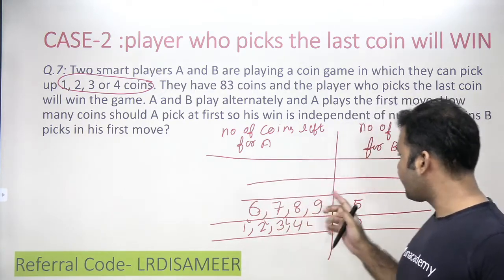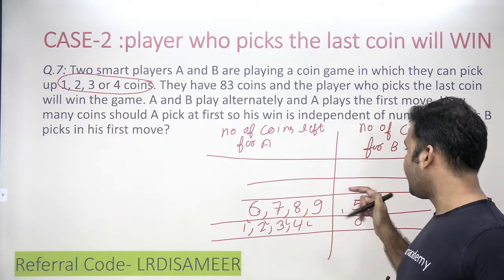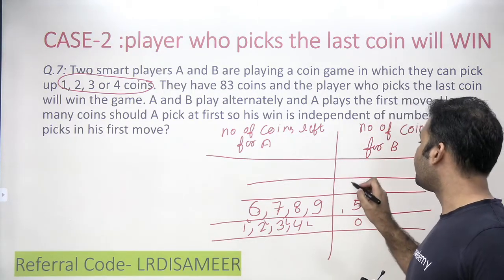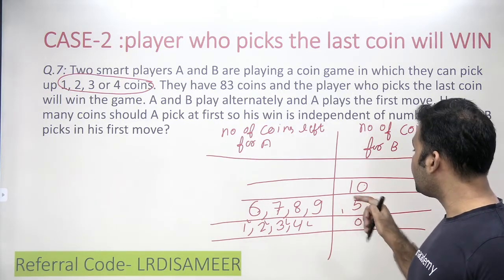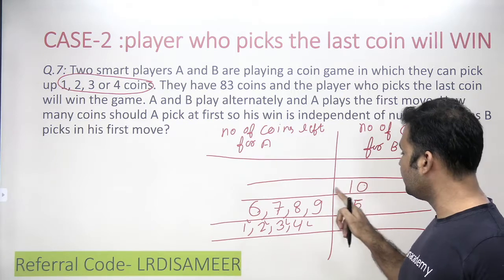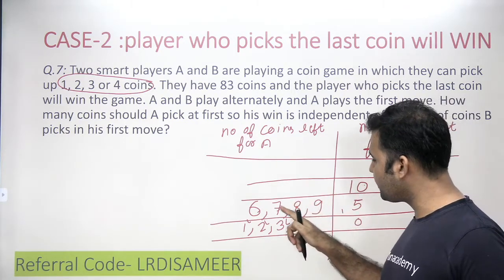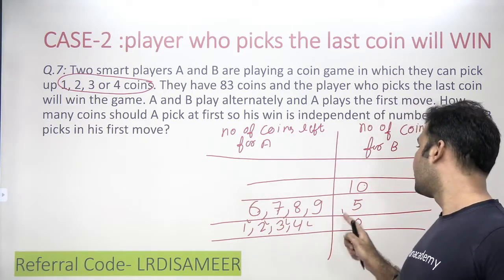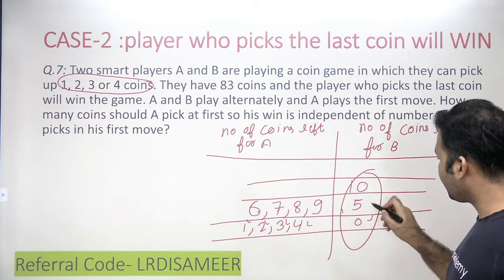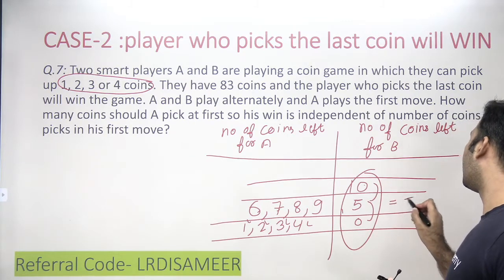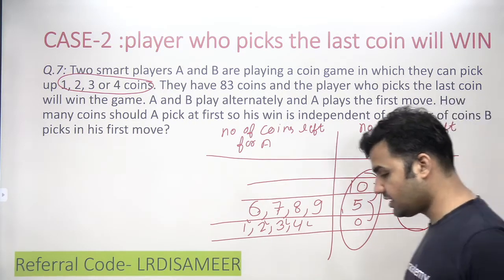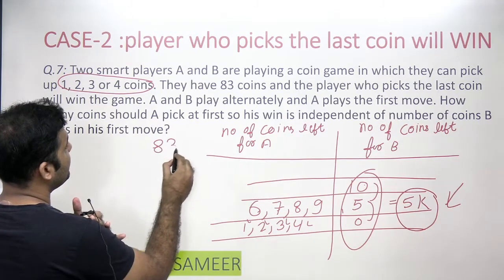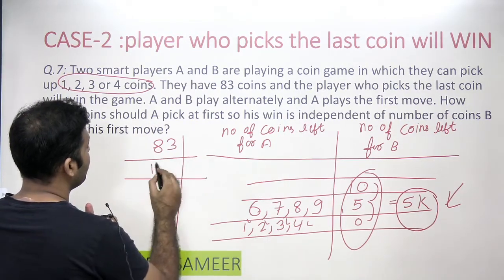Then, whatever number B picks, A should have any of the numbers six, seven, eight, or nine. If B picks one, he should leave nine coins for A, meaning there should be ten coins on the table. If B picks two, A has eight; if B picks three, A has seven; if B picks four, A has six. So ten coins should be available. Notice that all these controlling numbers — five, ten — are multiples of five. So 5k is the controlling factor when the person picking the last coin wins.